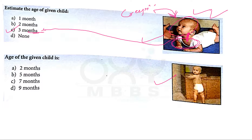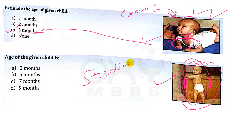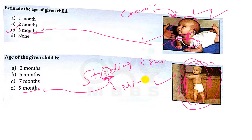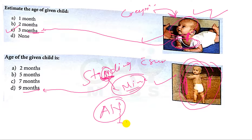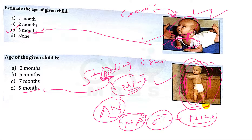Now in this picture, the baby is standing with support, and standing with support is achieved at around nine months of age. The letter N in the word 'standing' will tell you this — from N, then A, making 'Na,' and Na in number is nine. So standing with support is achieved at around nine months of age.